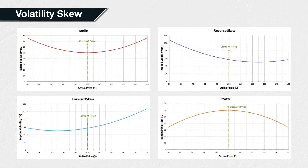In the real world, you will almost never see a frown, though. The actual percentages and prices used in these four charts are arbitrary examples. The shape of the curve is what we're concerned with here.